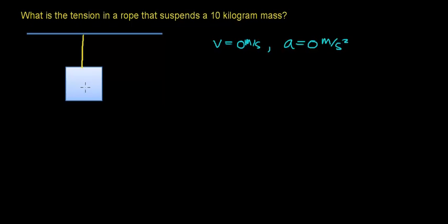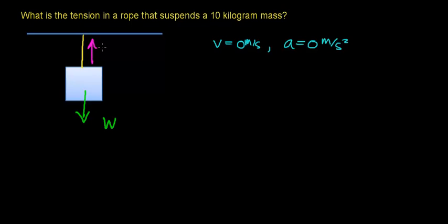Before we do anything, we should look at the forces acting on this object. This object is here on Earth, therefore the force of gravity is pulling this object in the downward direction, giving it weight. In response to the weight force due to gravity, the rope is going to pull back on this object in the upward direction, giving it a force we call tension, which we abbreviate with a capital T.